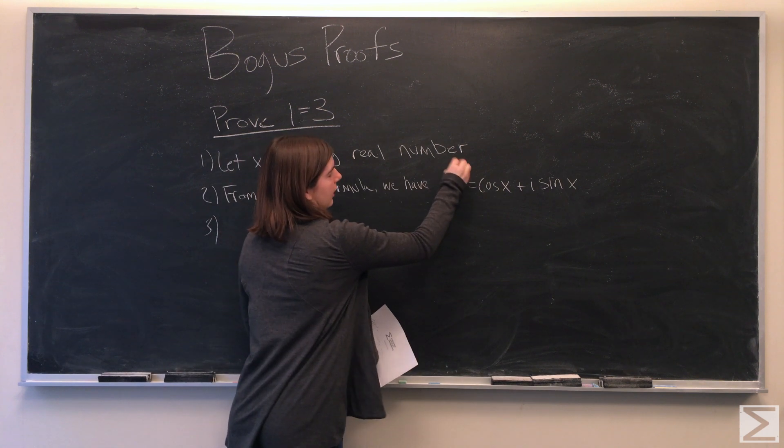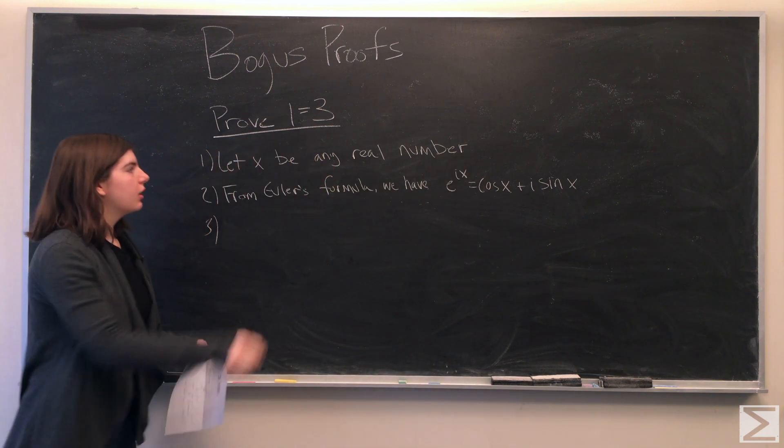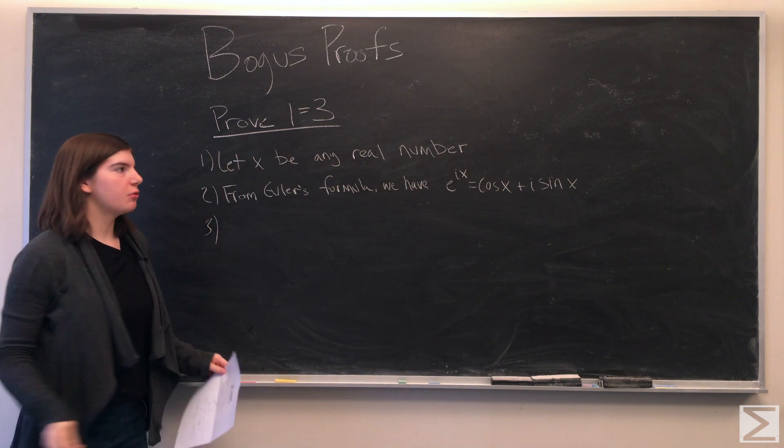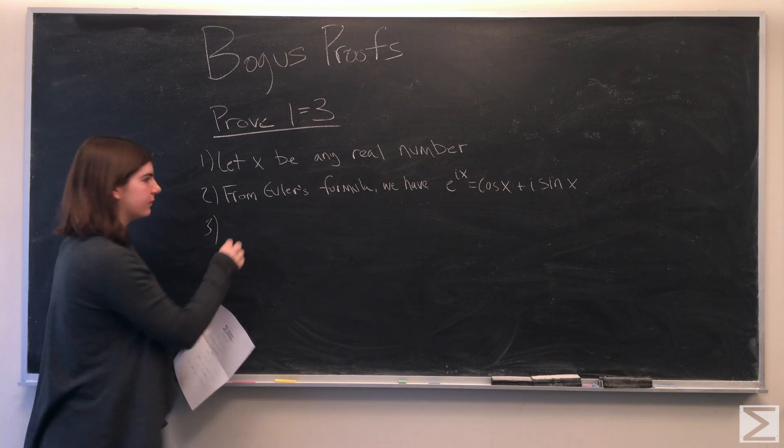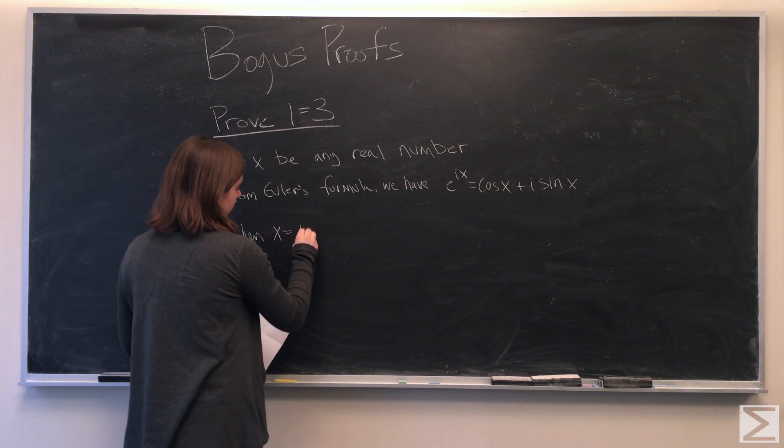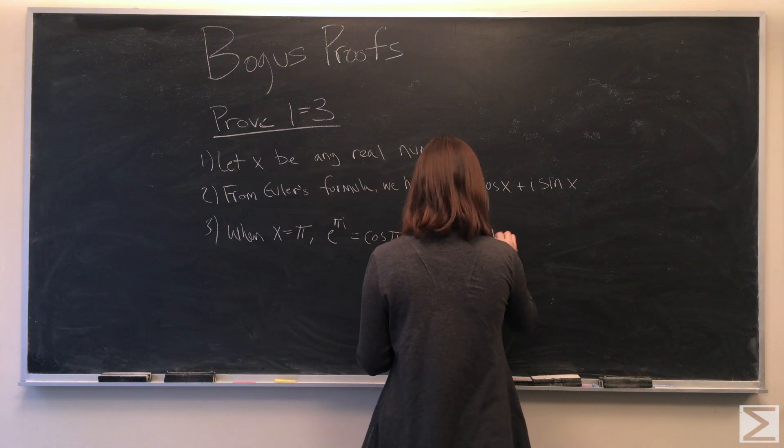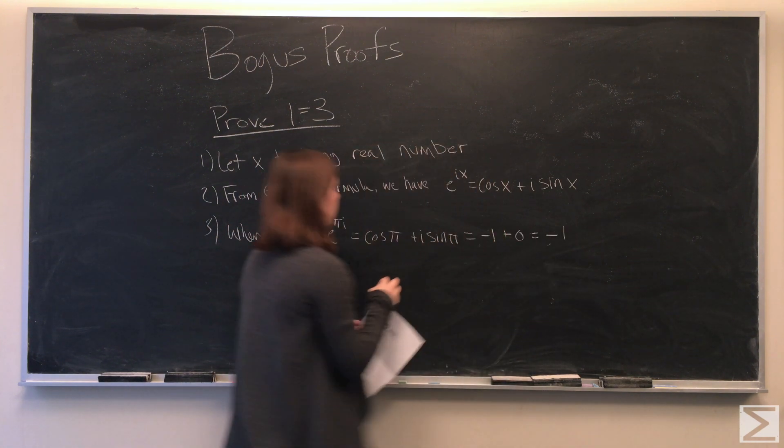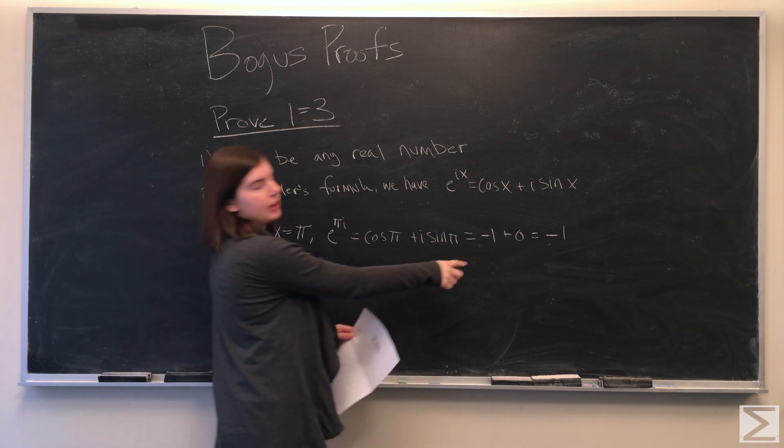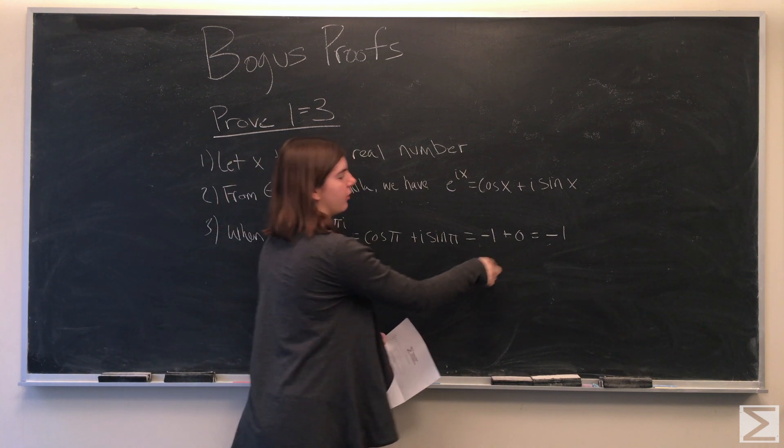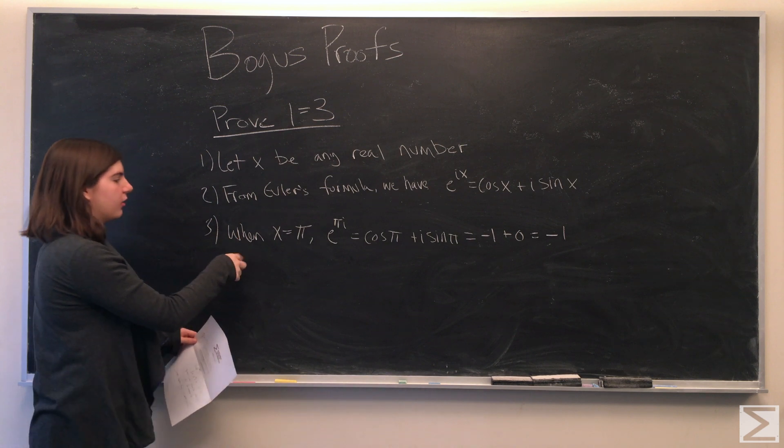Here, i is a complex number. So since pi is a real number, we can let x equal pi. The cosine of pi is equal to negative 1, and the sine of pi is 0, so we're left with negative 1.